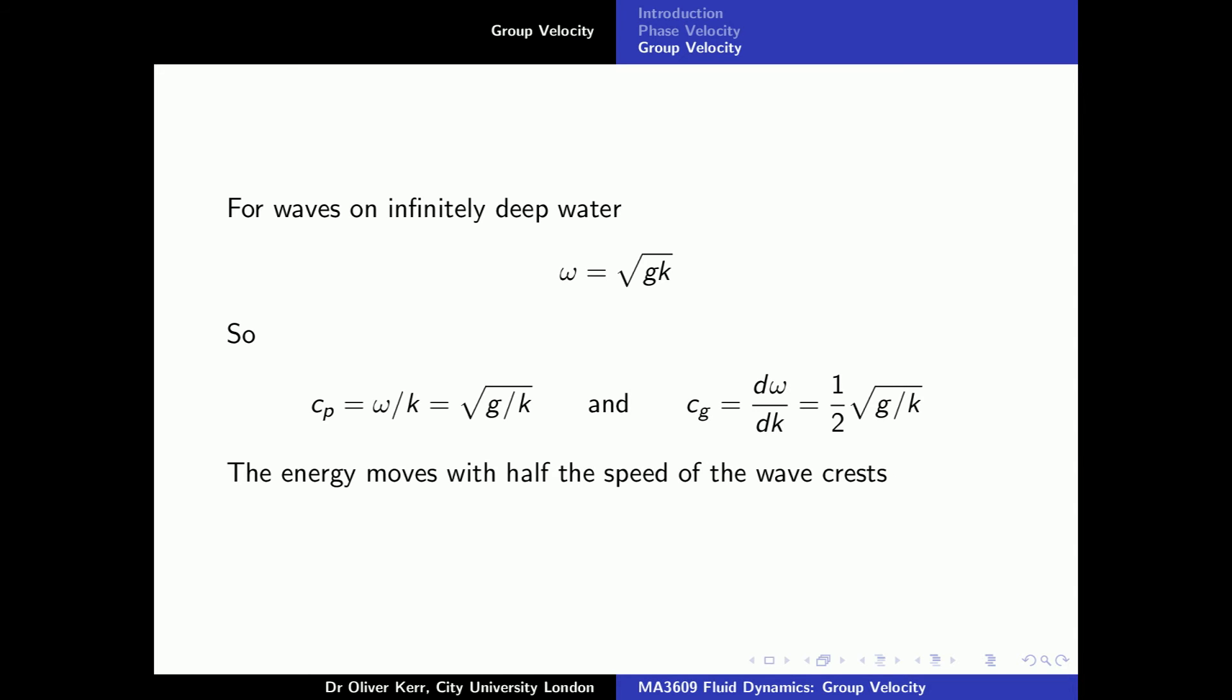For waves on deep water, the dispersion relation is that omega is equal to the square root of g times k. The phase velocity is omega divided by k, giving the square root of g divided by k. The group velocity is the derivative of omega with respect to k, and is half the square root of g divided by k. Thus, the group velocity is half the phase velocity. The energy moves with half the speed of the wave crest.